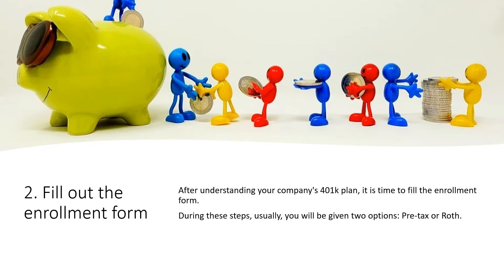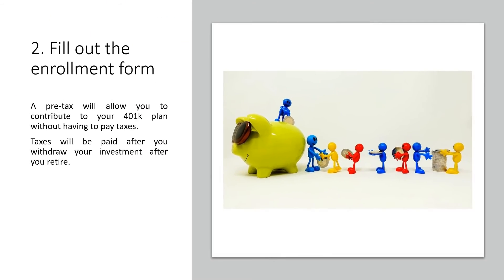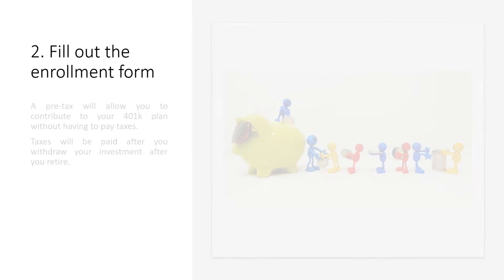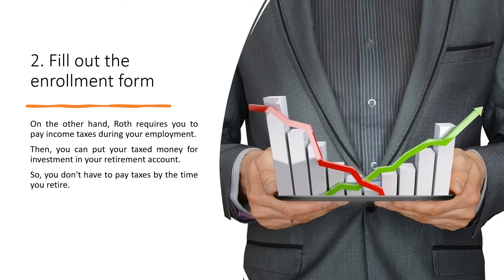2. Fill Out The Enrollment Form. After understanding your company's 401k plan, it is time to fill the enrollment form. During these steps, usually, you will be given two options: pre-tax or Roth. A pre-tax will allow you to contribute to your 401k plan without having to pay taxes. Taxes will be paid after you withdraw your investment after you retire. On the other hand, Roth requires you to pay income taxes during your employment. Then, you can put your taxed money for investment in your retirement account, so you don't have to pay taxes by the time you retire.